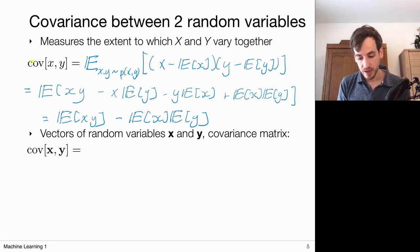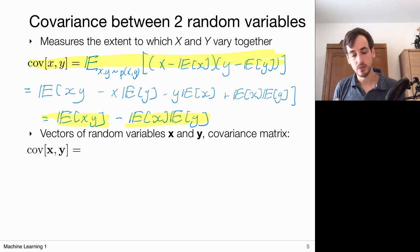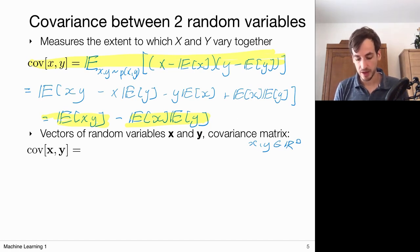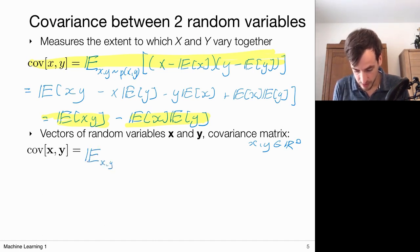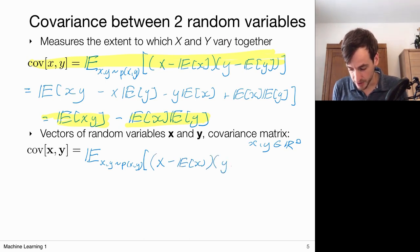The covariance measures the extent to which two random variables x and y vary together, and it breaks down into two separate terms. We also want to deal with vectors of random variables x and y — random vectors — and measure the covariance between them. This covariance between two vectors is defined as the expected value of (x - E[x])(y - E[y])ᵀ, where x and y are defined relative to some probability distribution.